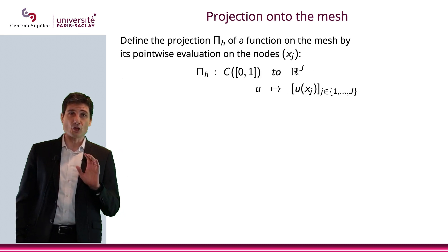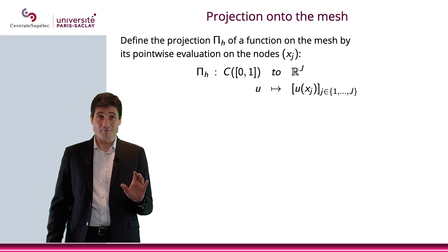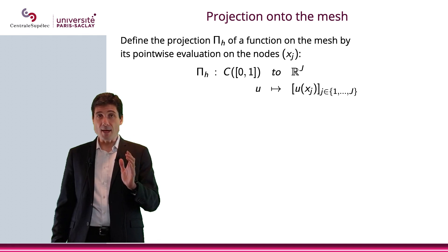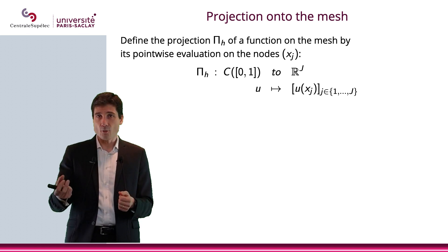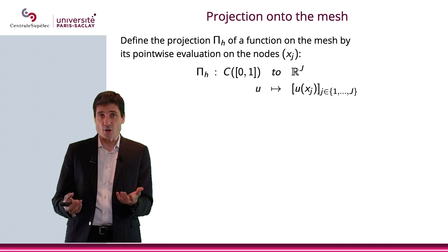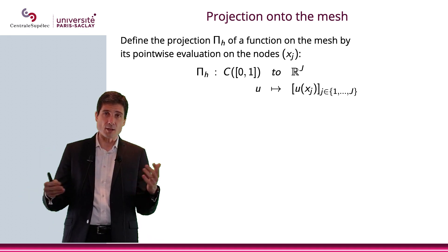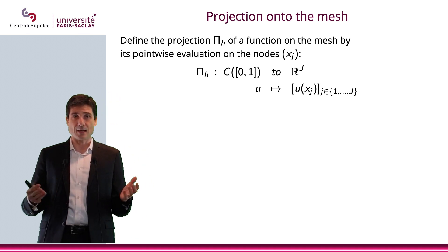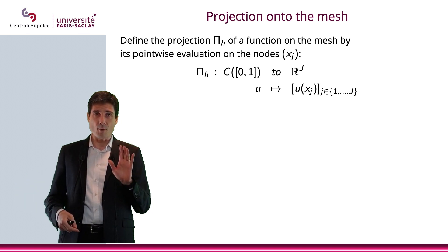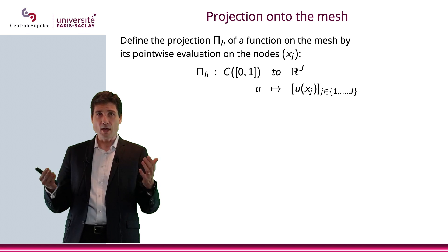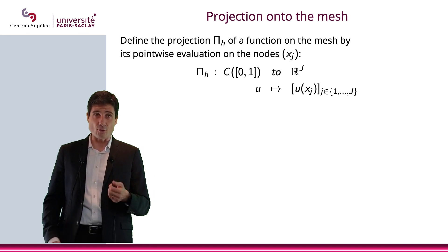Let me define the projection of a function onto our grid — that's called π_h. π_h takes a continuous function on [0,1] and gives you the vector with j components that is the evaluation of that function on the points of the grid, from x_1 to x_j. I'm not including the two endpoints x_0 and x_{j+1}, which are basically 0 and 1. So I'm simply looking at the values of the function at all the interior points of the grid — a vector of dimension j.